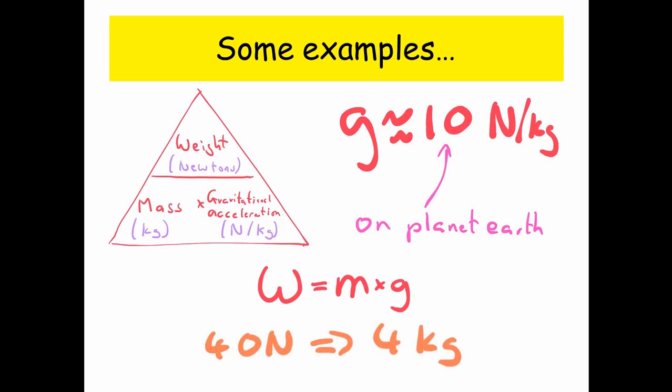Now if we had a weight of 40 newtons, well that would be equal to 4 kilograms of mass on planet earth. And how do we know this? Well if we look at our triangle, weight at the top, so weight divided by gravitational acceleration, that's going to give us mass. Gravitational acceleration is 10. So 40 divided by 10, that is 4 kilograms.